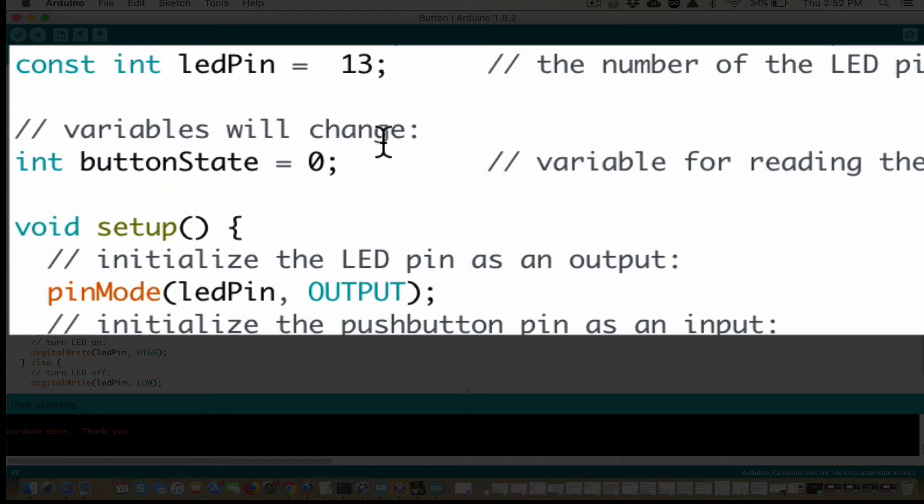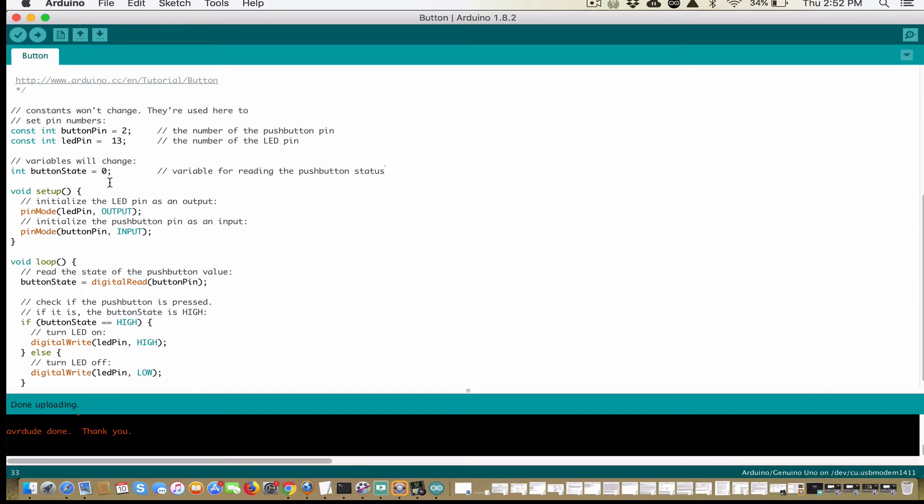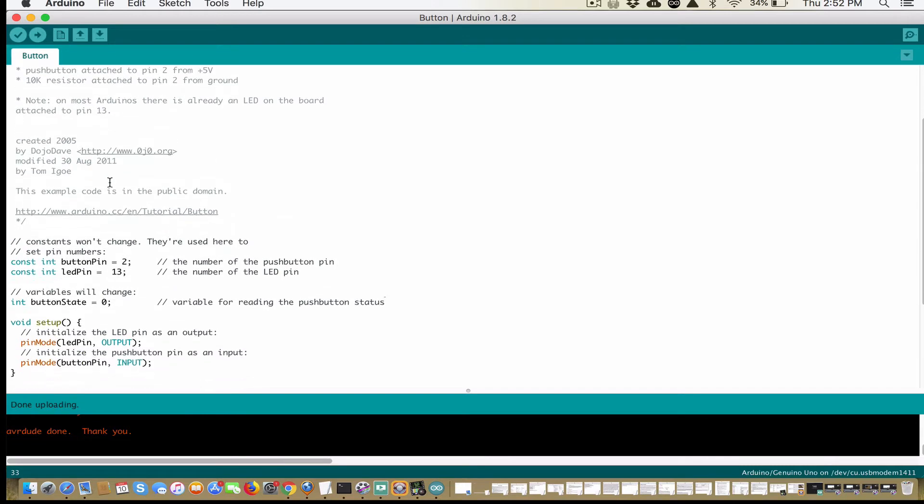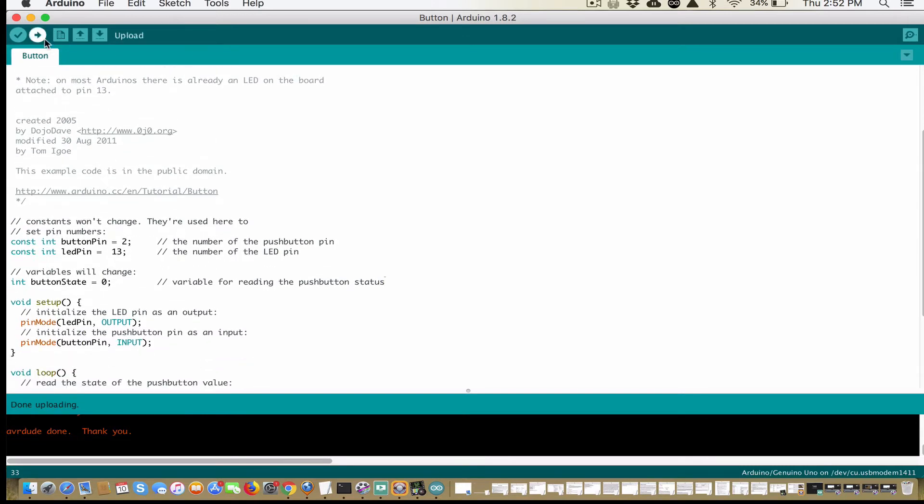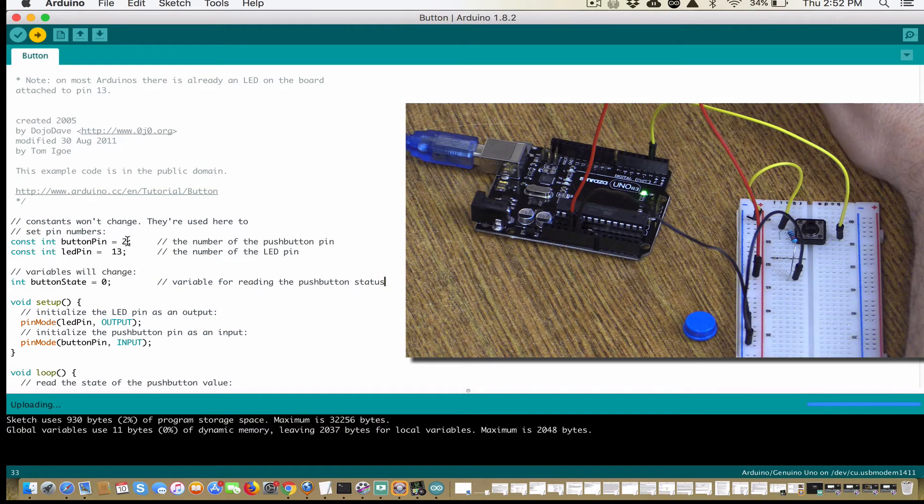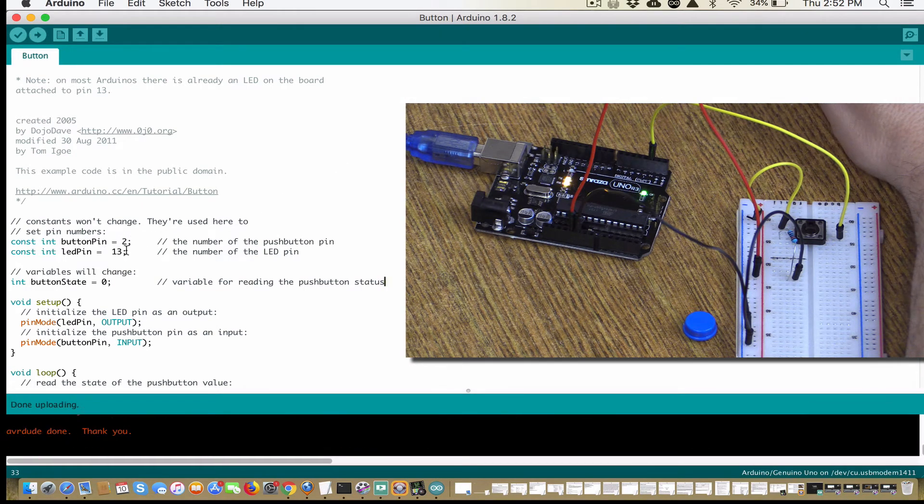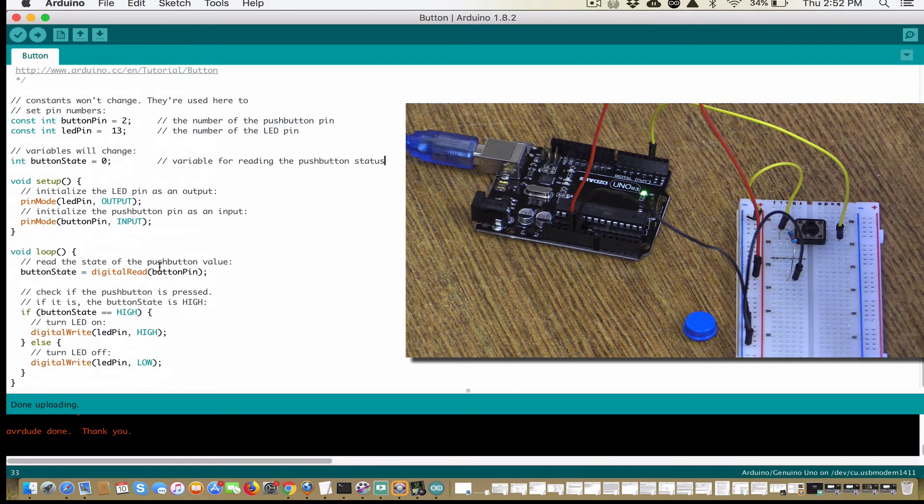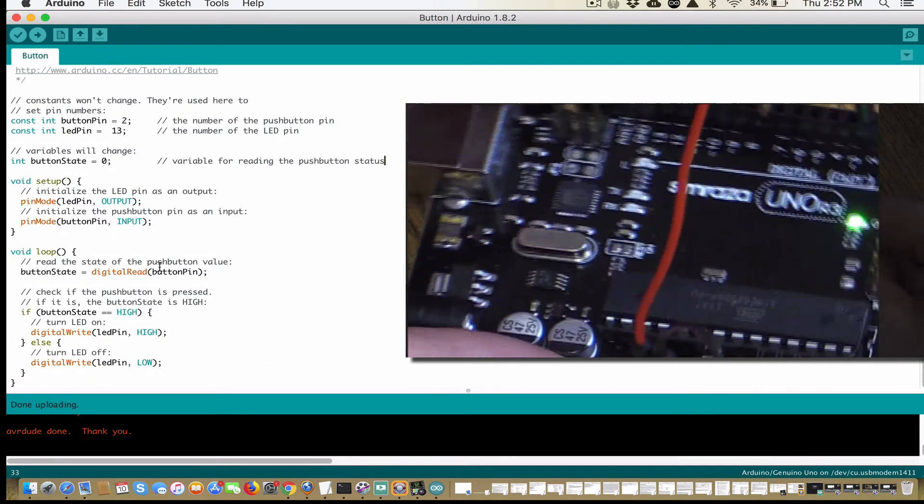This says variables will change into button state zero. So that means the state of the button is off to start. You can take a look through this code later and you will get inside and change it later. But for now, we're just going to upload it to the board and we're going to see what happens. So our button pin, our button is attached to number two. We did that work earlier. And LED pin is 13. So when we click on the button, it should turn on the light on the board. Let's see how it works.